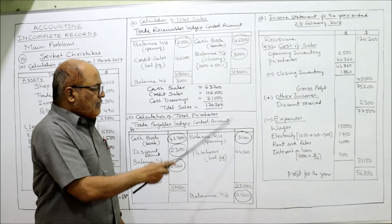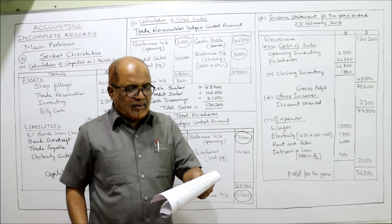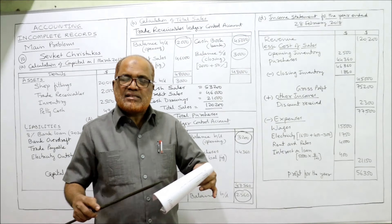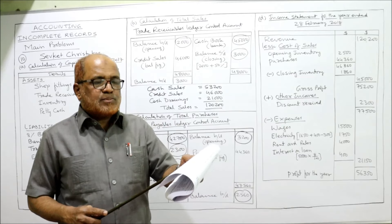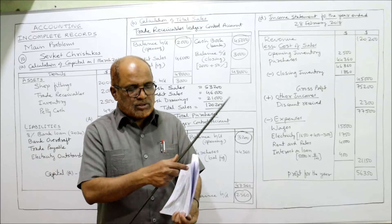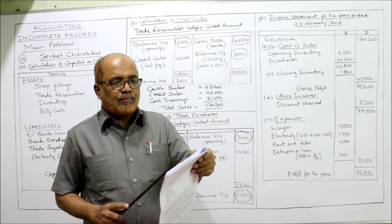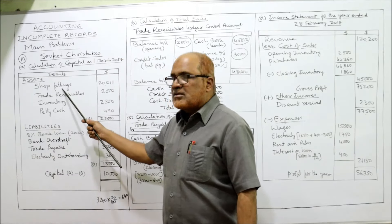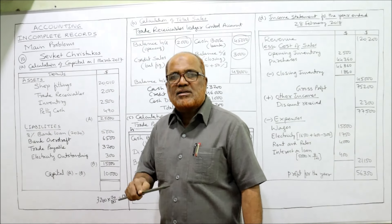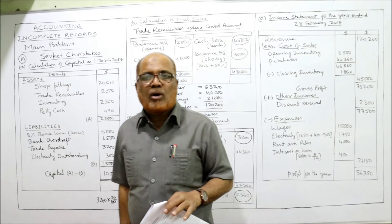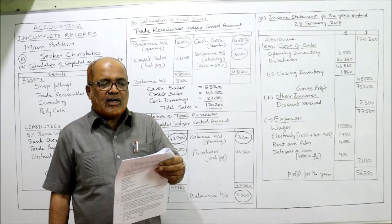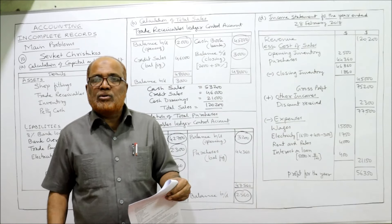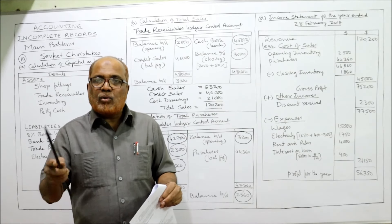An examination of the business bank account showed the following expenditure paid by check: wages $15,000; electricity $1,650; rent and rates $4,000. Closing inventory on 28th February 2018 was $1,860. Sevket decided not to depreciate his shop fittings. A payment of $400 for electricity used during the year was outstanding at year end.